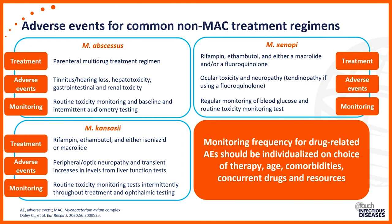Mycobacterium xenopi is very similar, also using rifampin and ethambutol, sometimes with a fluoroquinolone. Fluoroquinolones do carry some specific adverse events including musculoskeletal toxicity and tendinopathy. If these occur, consider stopping or decreasing the dose of the drug. Sometimes you don't know which drug is causing the problem, and you have to stop all drugs and reintroduce them one by one, a week at a time, to isolate which drug is causing the toxicity.